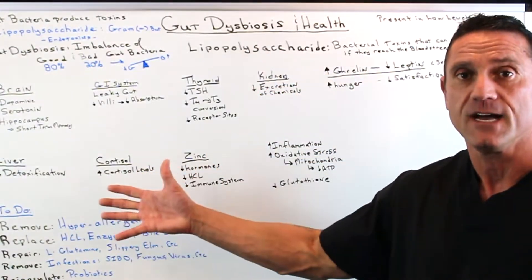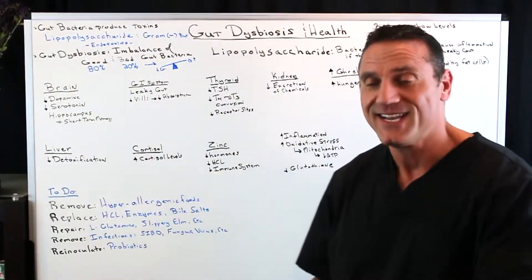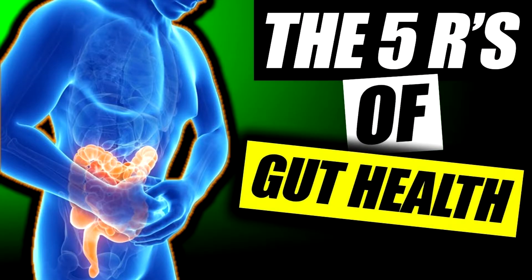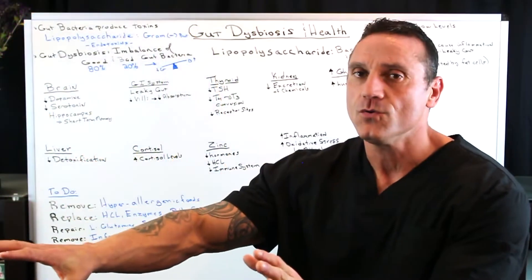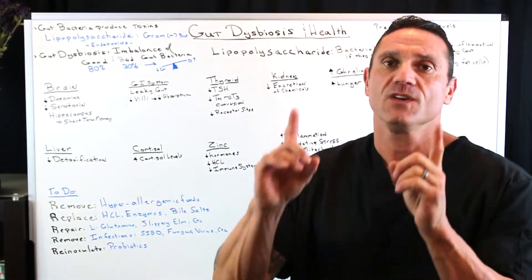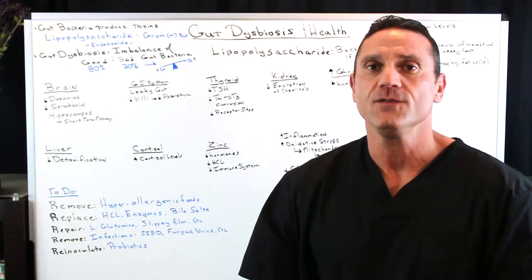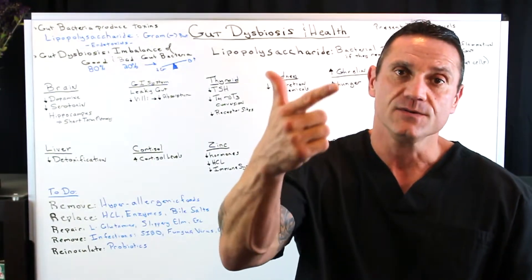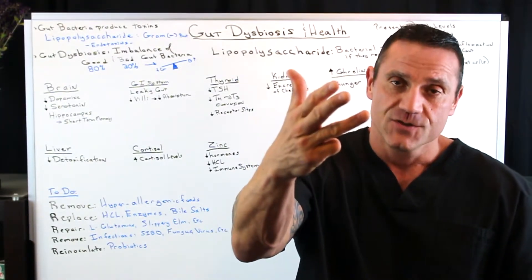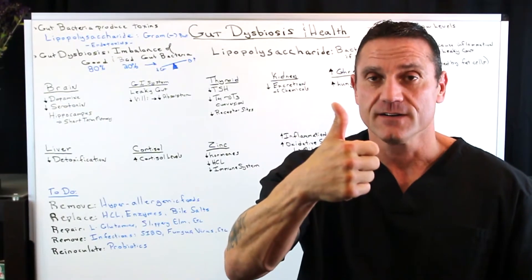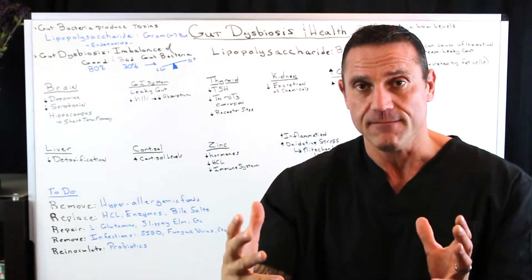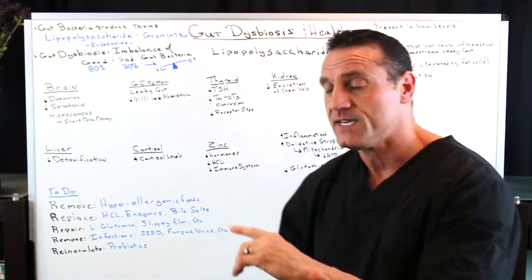So what do you do about all this? Very simple: remove, replace, repair, re-inoculate. First, you want to remove the insult — remove the foods that are causing all these problems: wheat, gluten, dairy, soy, peanuts, and sugar. That will make anybody inflamed, so you want to remove that the best way you can.